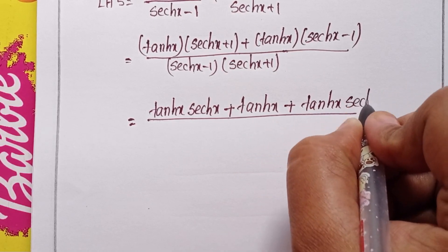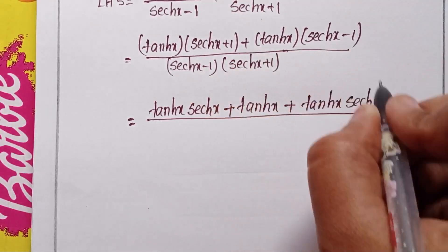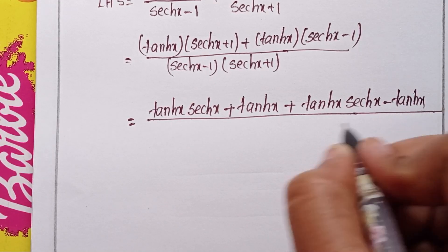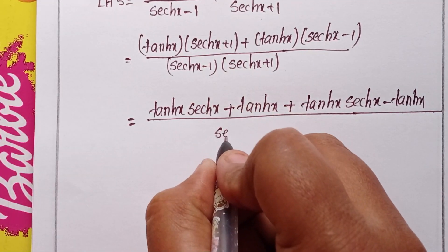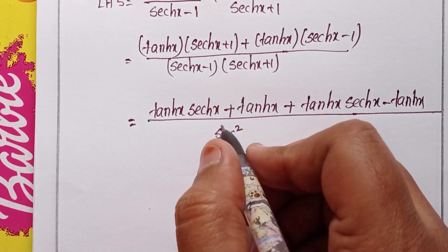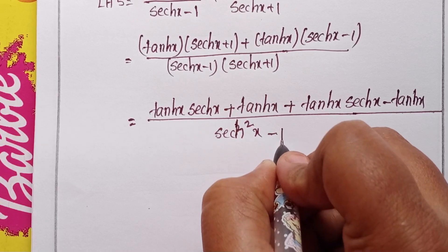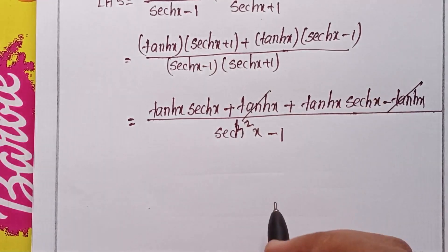By sech squared x minus 1. This term and this term cancel, so 2 tanh x times sech x.